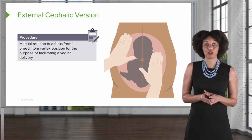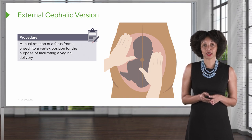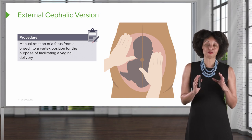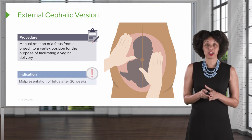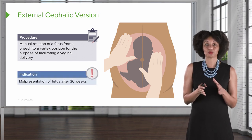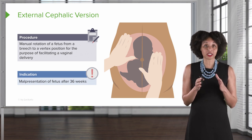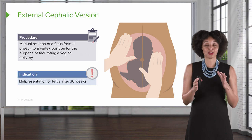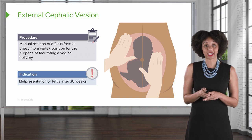The first procedure is called an external version, sometimes also called an external cephalic version. During this procedure, the fetus is actually rotated from a breech presentation all the way to a cephalic presentation. The reason we do this is because the cephalic presentation is the safest for vaginal delivery, and so when the fetus presents in any other position, we have an opportunity to try to rotate the fetus to cephalic.